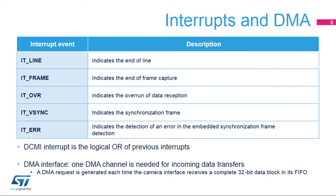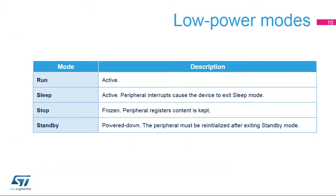The global interrupt is the OR of all single interrupts. The DMA interface is active when capture mode is enabled. A DMA request is generated each time the camera interface receives a complete 32-bit data block in its FIFO. For DMA channels available to DCMI, please refer to the DMA section in the STM32F7 reference manual. DCMI operations are not possible when the device is in stop or standby mode.